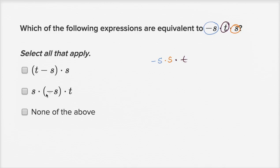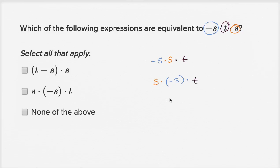Well, almost. Instead of saying negative s times s, one choice says s times negative s. Because multiplication is commutative — a times b is the same as b times a — I can swap those two and write it as s times negative s times t, which is exactly what that choice has. So that one applies.